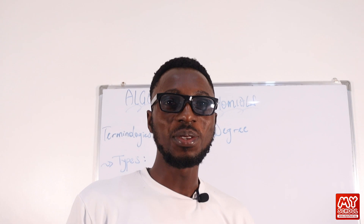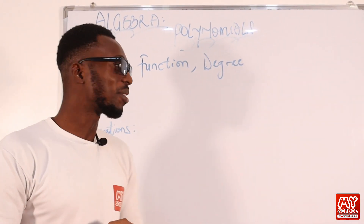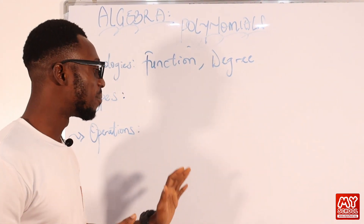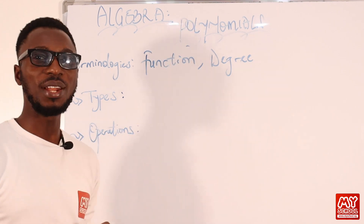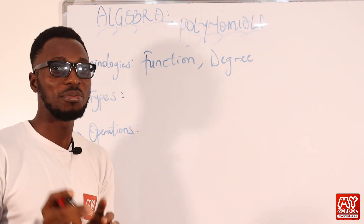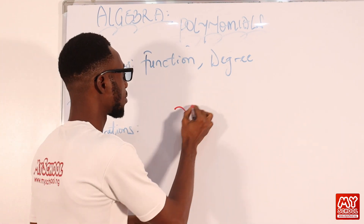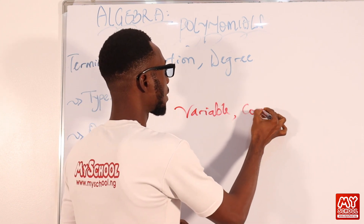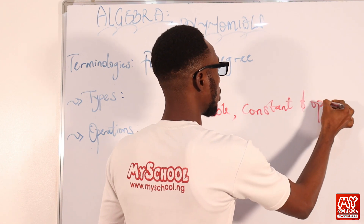Welcome back to my YouTube channel. We are going to begin with the topic polynomials. How would you describe the term polynomials? Basically, a polynomial is a kind of algebraic expression — remember algebra — it is a kind of algebraic expression whereby you have at least one variable, you have constants, and you have operators or operations.